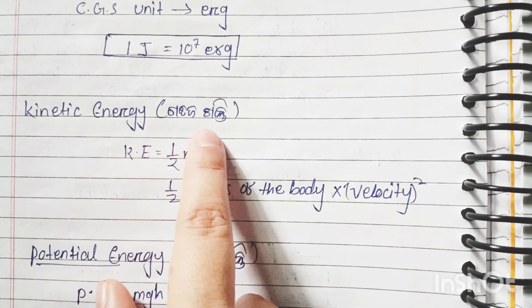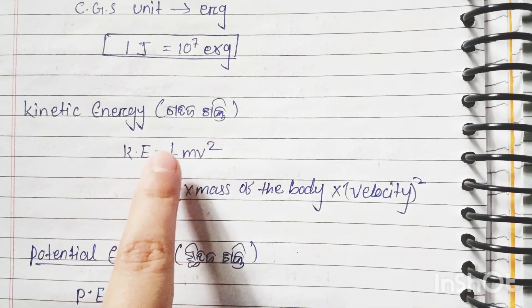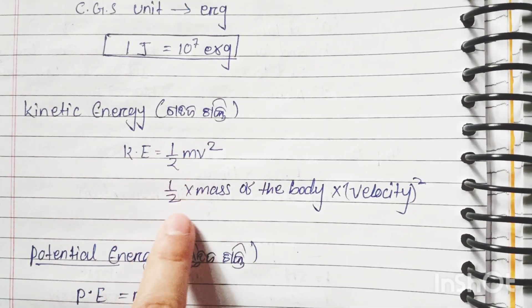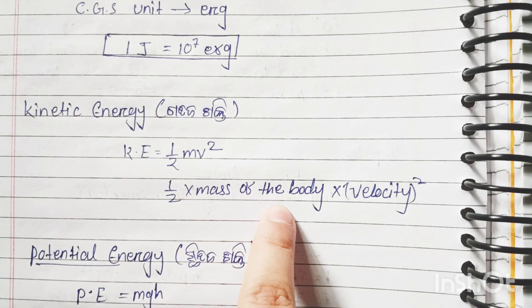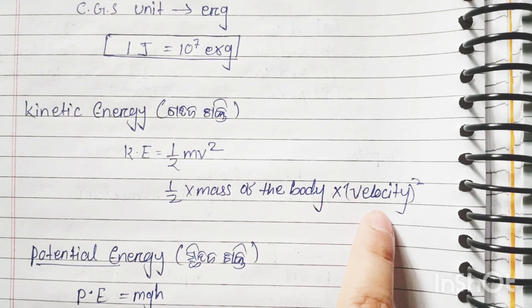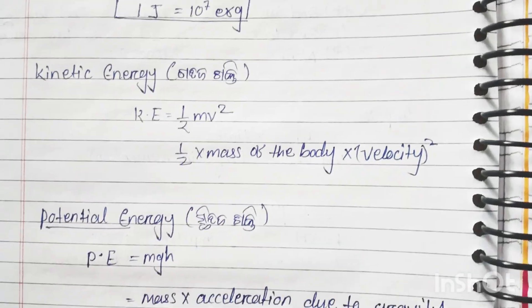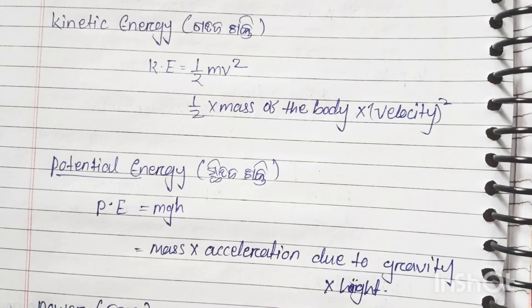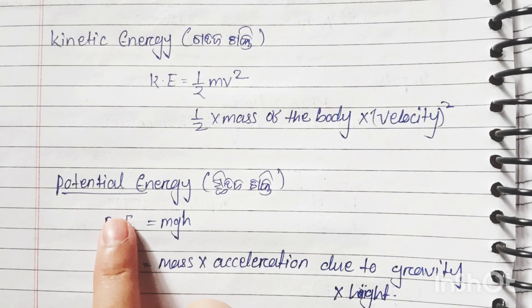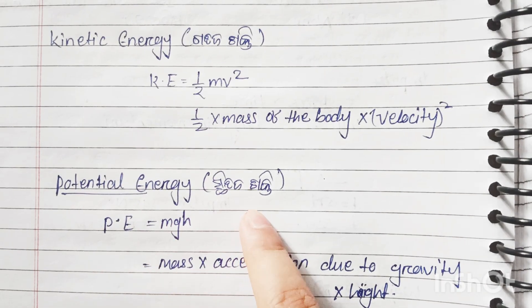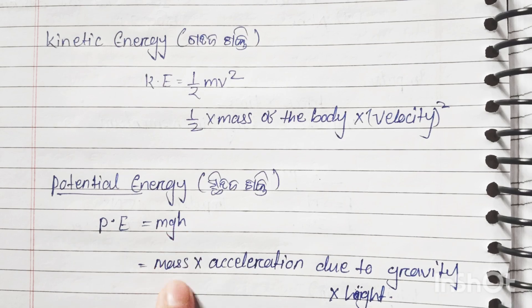Kinetic energy formula: KE equals half m v squared — half into mass of the body into velocity squared. Potential energy means stored energy.